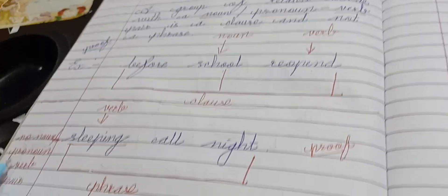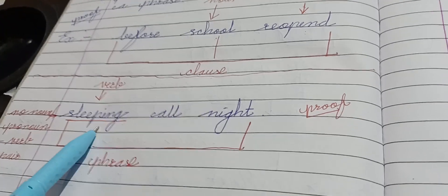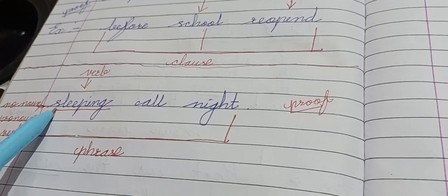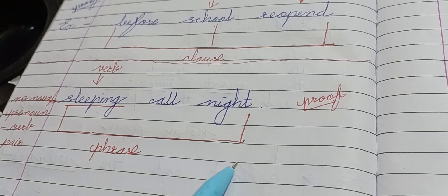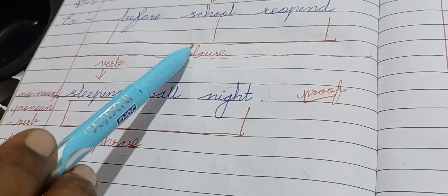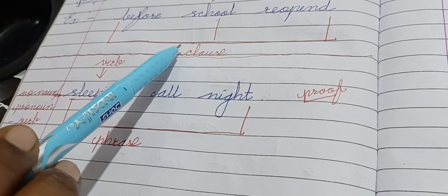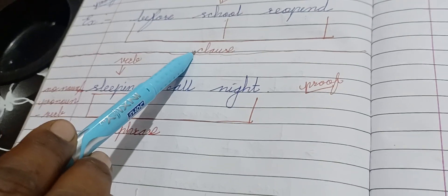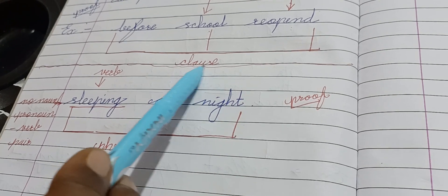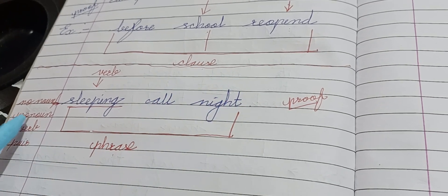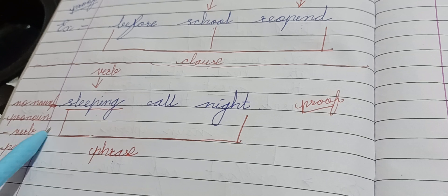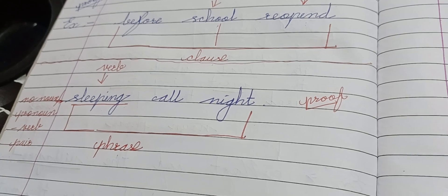In contrast, 'sleeping all night' is a phrase because it has no noun-pronoun and verb pair. That is the difference between a clause and a phrase — a phrase has no subject-verb pair.